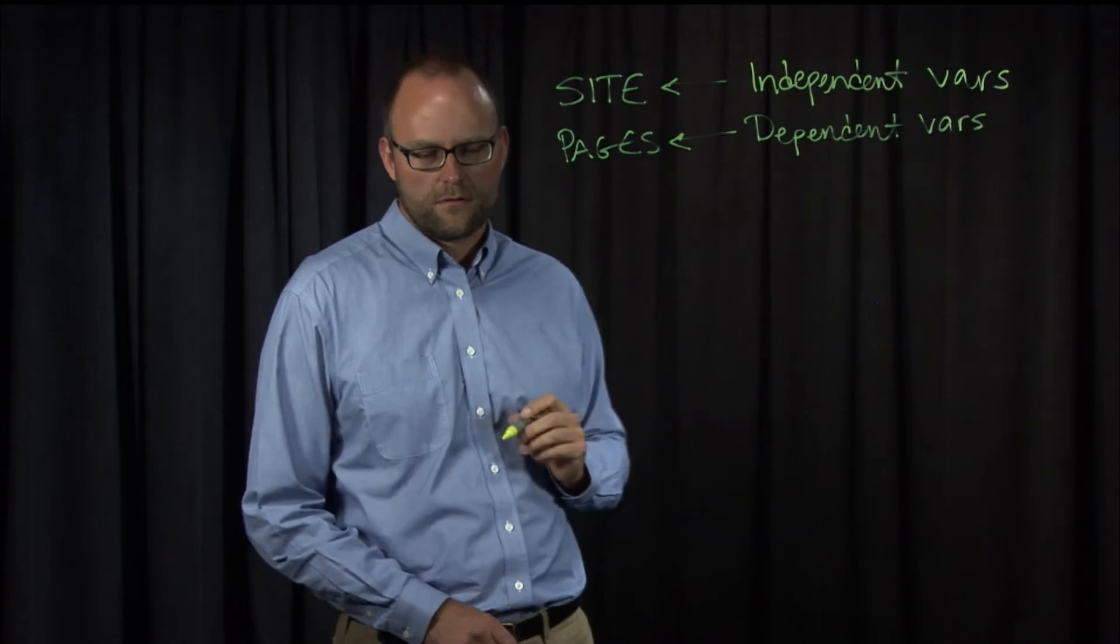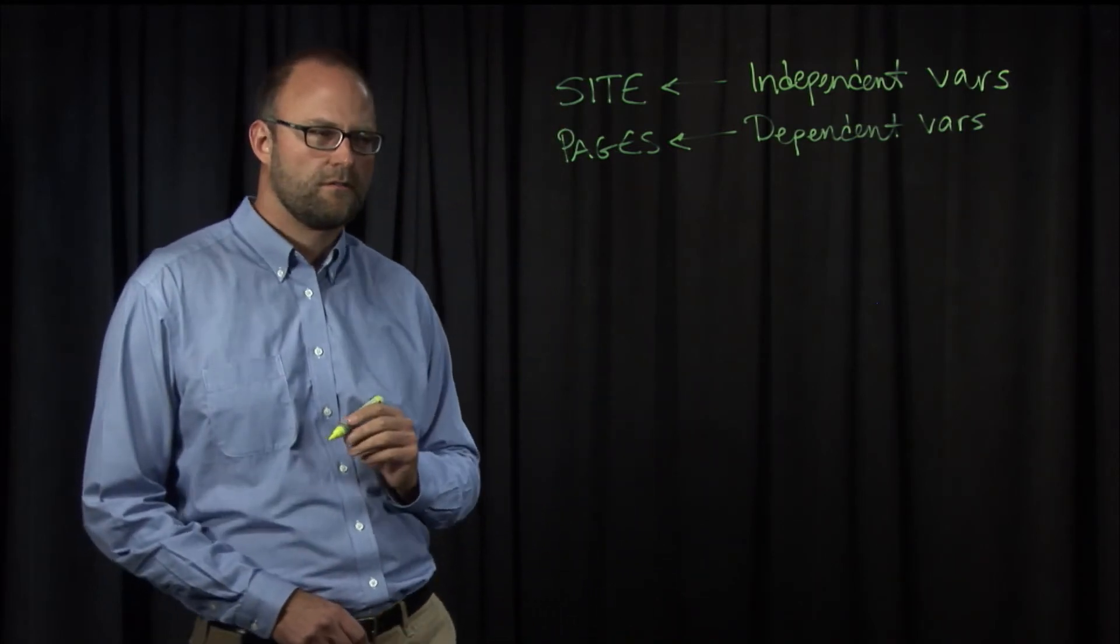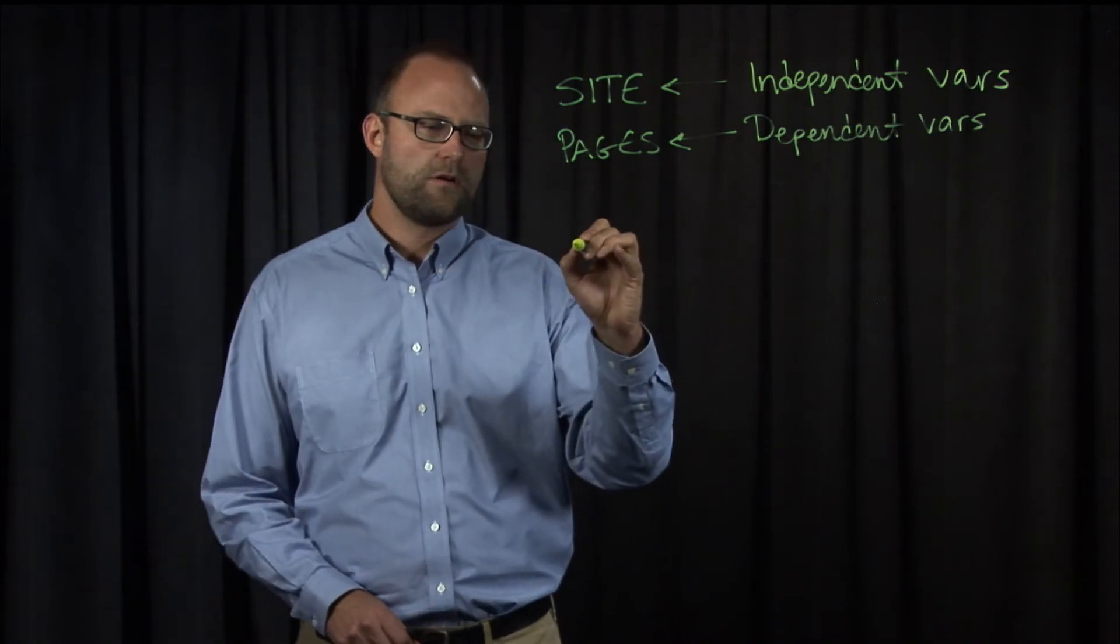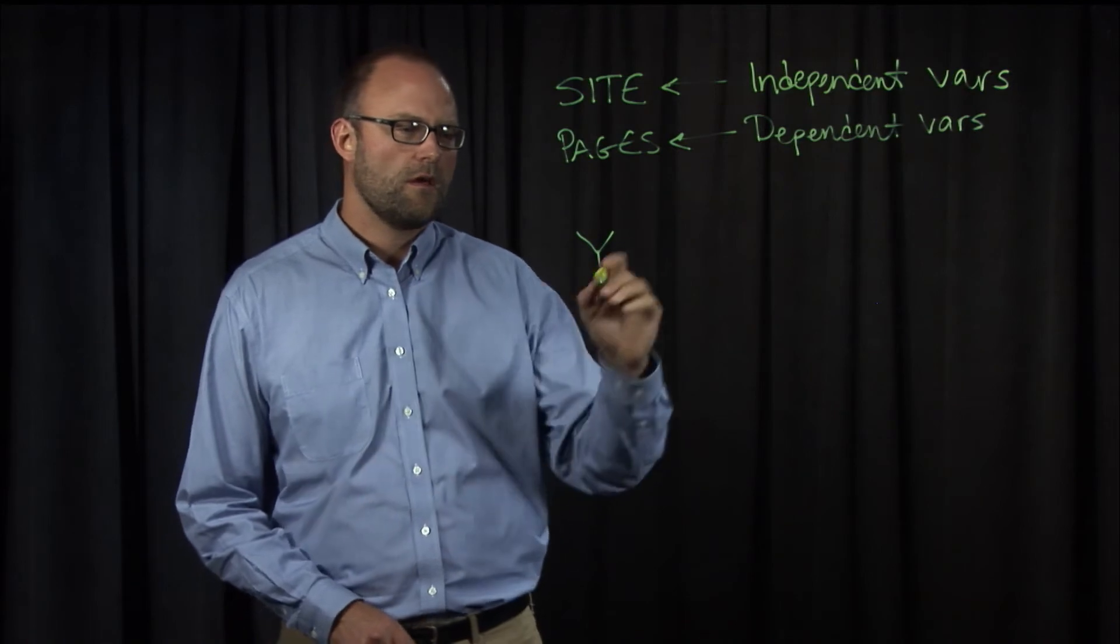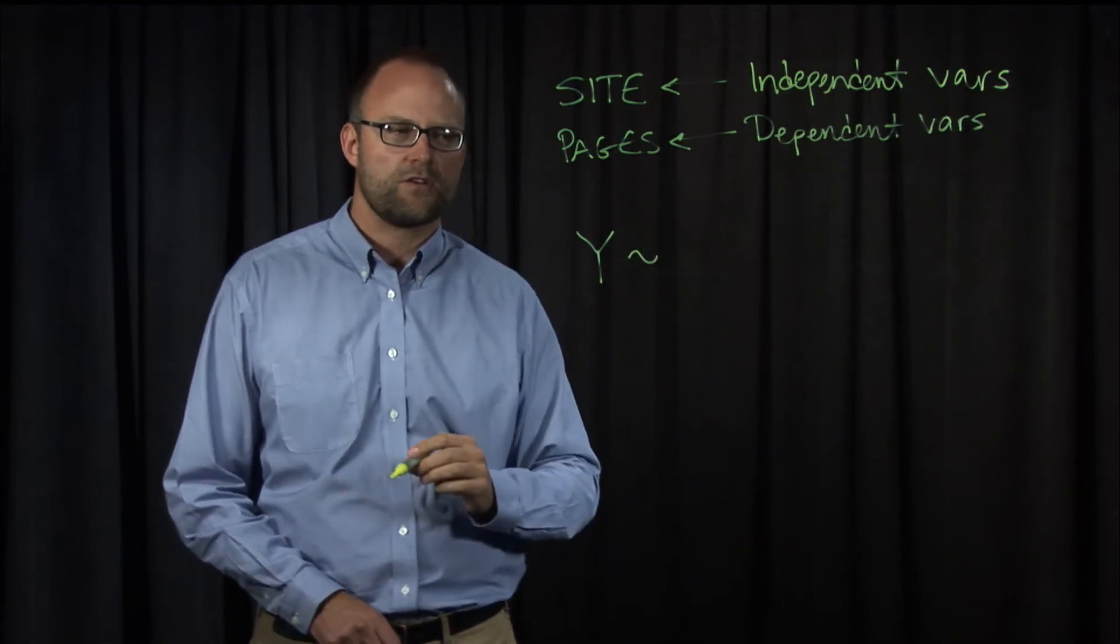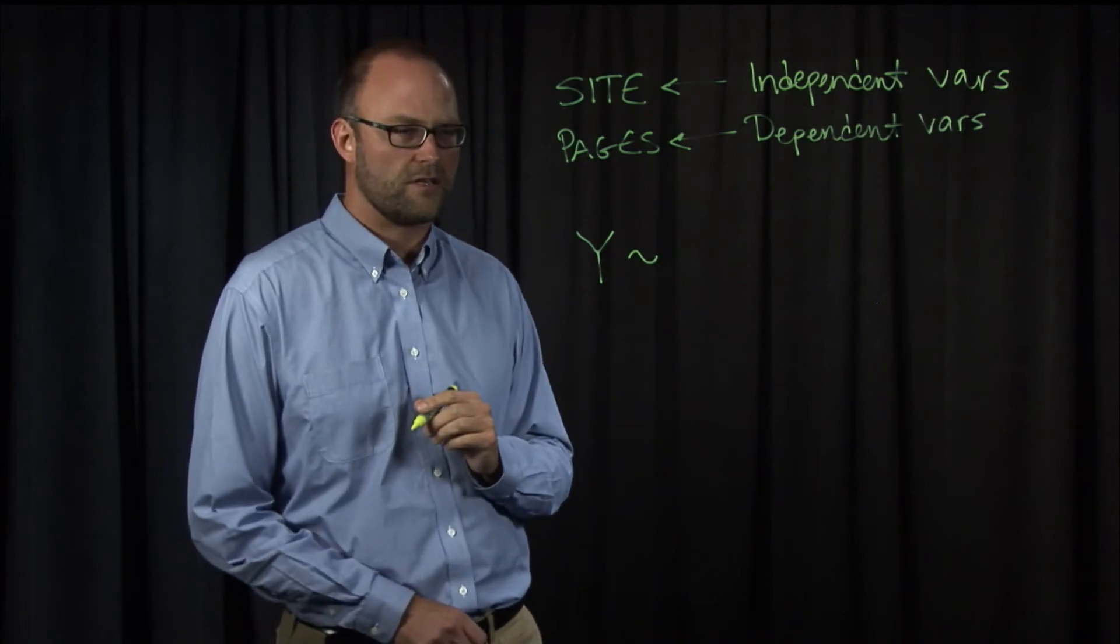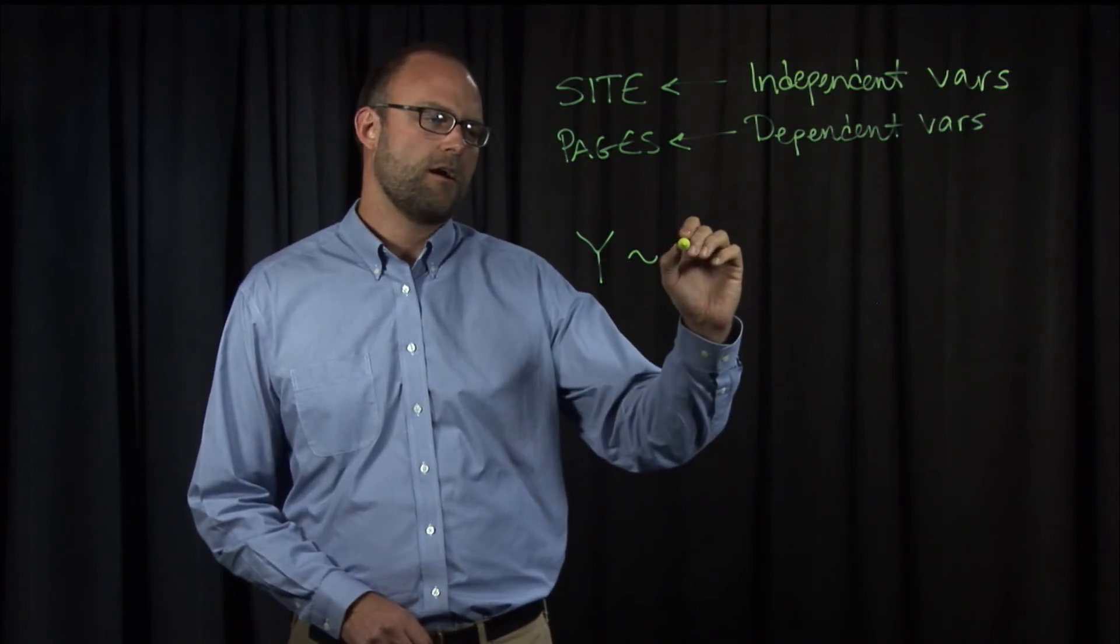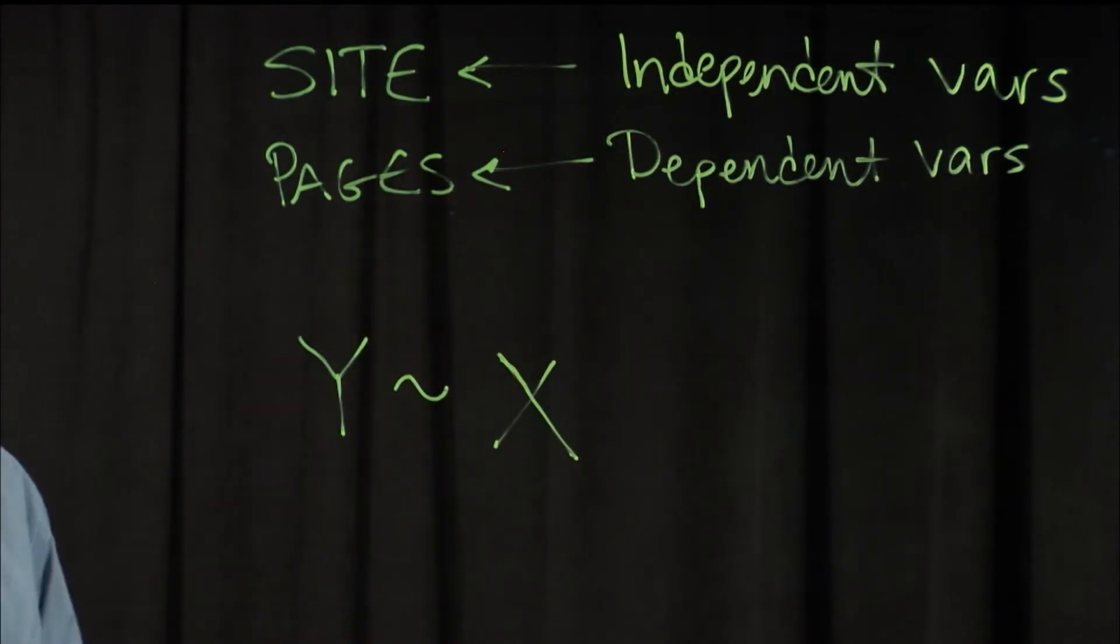Now, let's talk in general terms for a moment. The idea behind an experiment is that some measure, y, is going to change and be a result of, and this is using the tilde like kind of our notation does, as we'll see more of, some independent variables, let's say x. We just have one here, so we'll call it x. But if we had more than one, which we'll see later in the course, we may have x1 and x2 and x3 and so on.